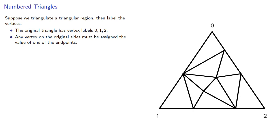For example, these points on this edge will either be labeled 0 or 2. Likewise, the points on the edge will either be labeled 1 or 2. And the points on the edge will be labeled either 0 or 1. Internal vertices can be assigned any way you want. This produces a proper labeling of the simplicial triangulation.